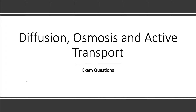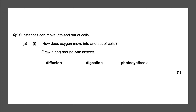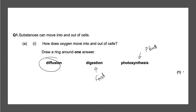Our first question states: substances can move into and out of cells — how does oxygen move into and out of cells? Draw a ring around one answer. The simple answer is diffusion, because digestion happens with food and photosynthesis happens in plants, so diffusion is how oxygen moves into and out of cells.